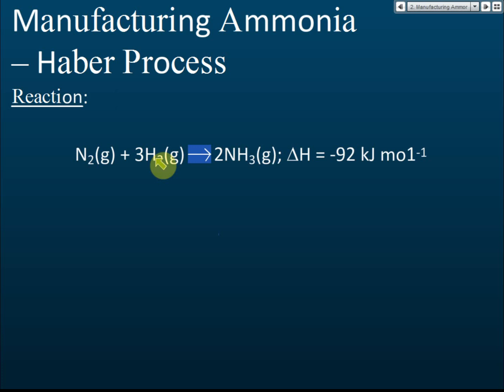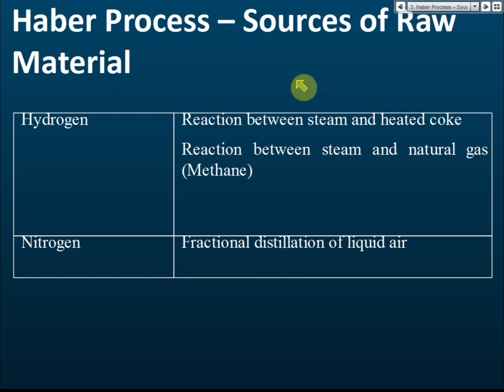To summarize so far: the process is called the Haber process, and the equation is nitrogen reacts with hydrogen to produce ammonia. Another important thing for the Haber process is the sources of the raw materials — hydrogen and nitrogen — because we need large amounts of both.